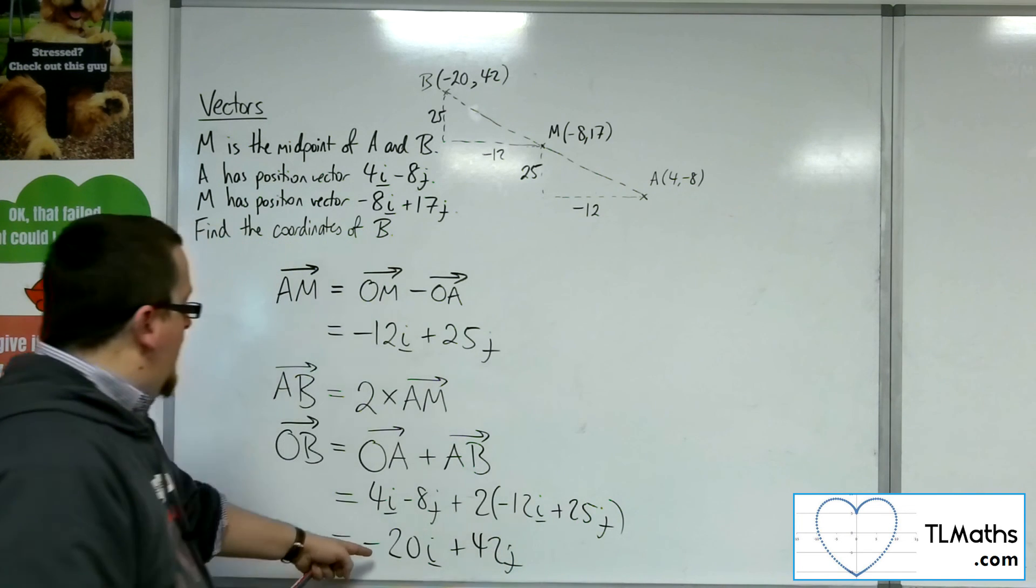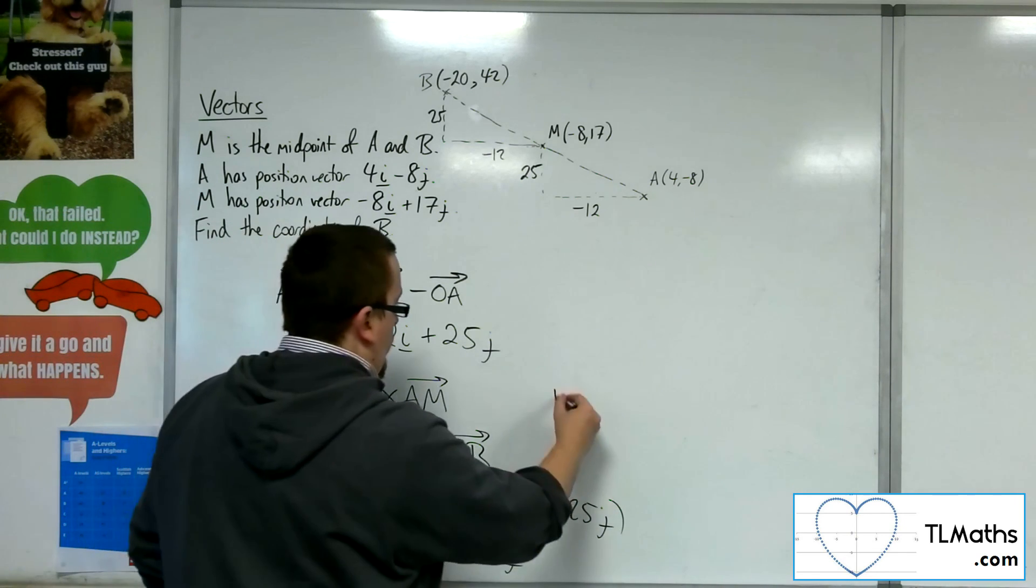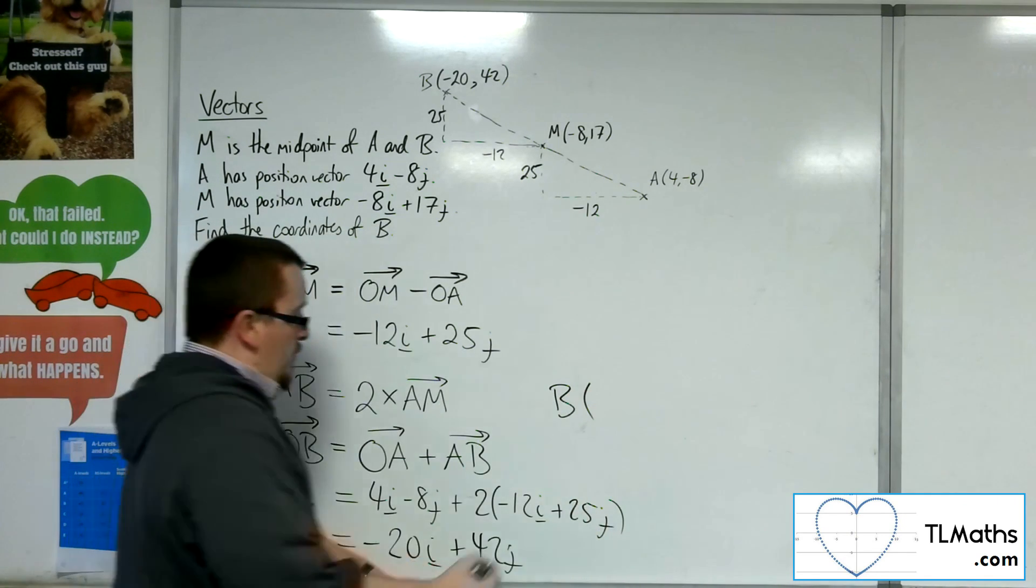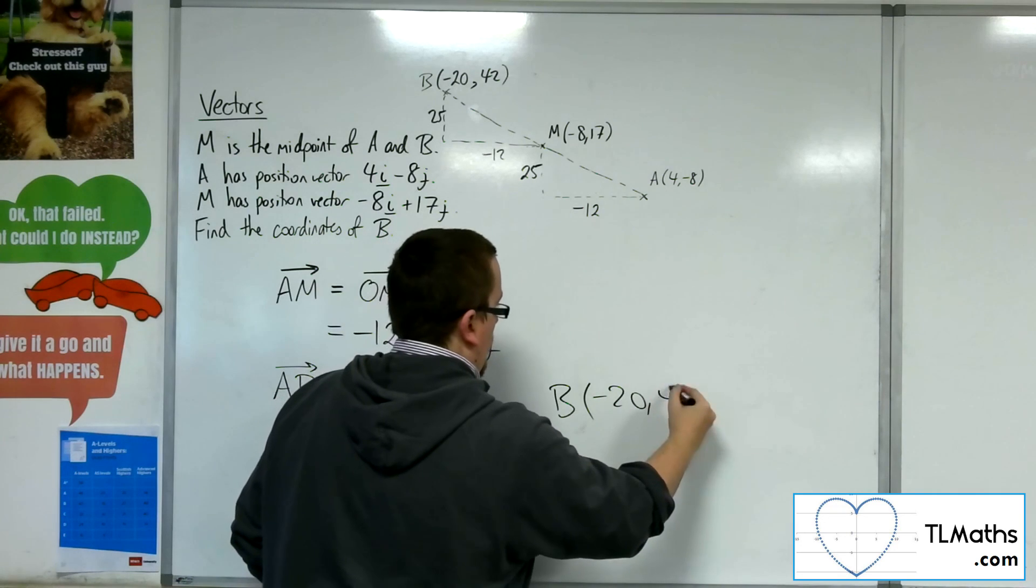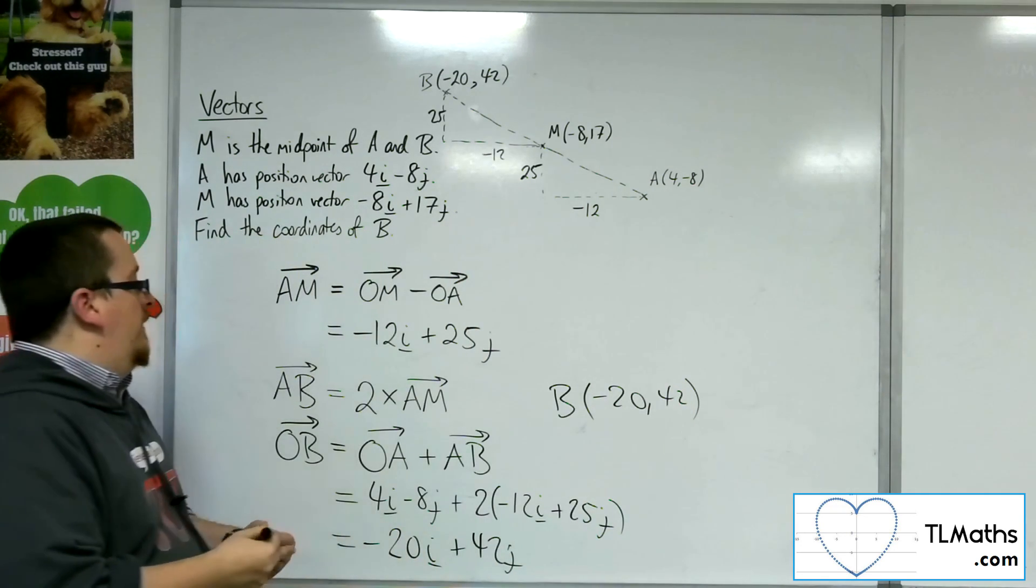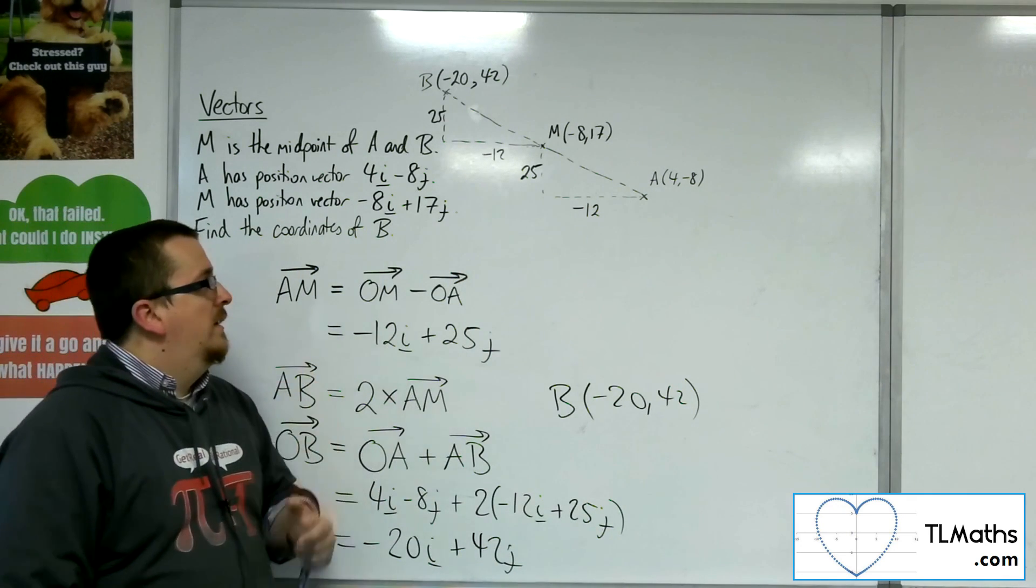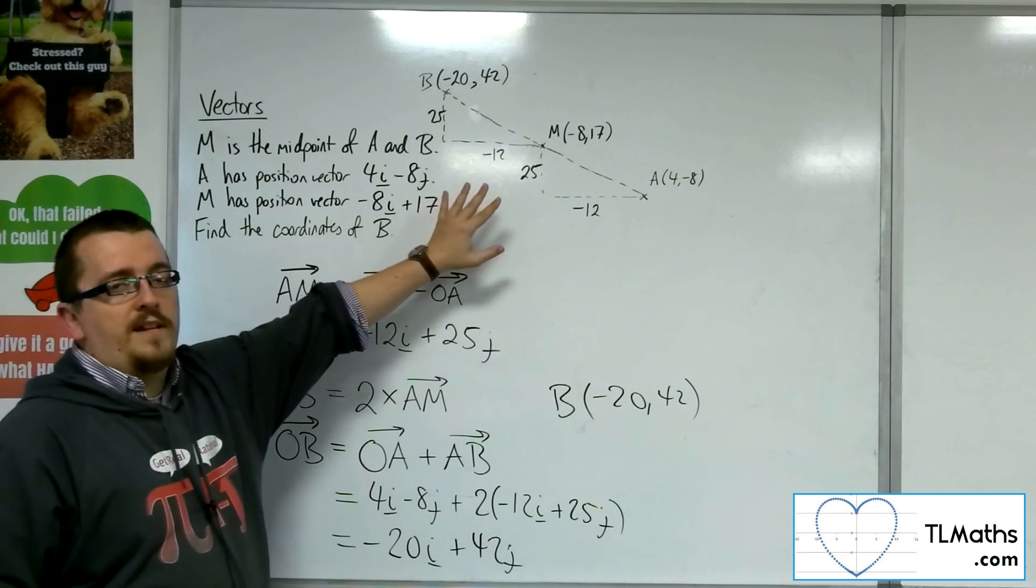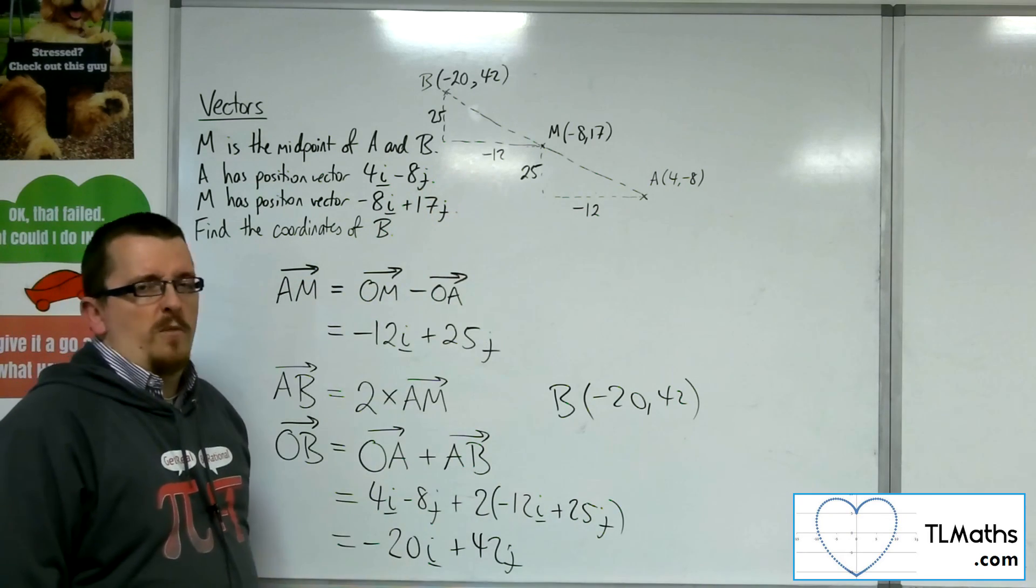And because we've now found the position vector of OB, I know that the coordinates of B must be minus 20, 42. So that's kind of like your vector method. But really, this problem can be broken down to just a coordinate geometry problem.